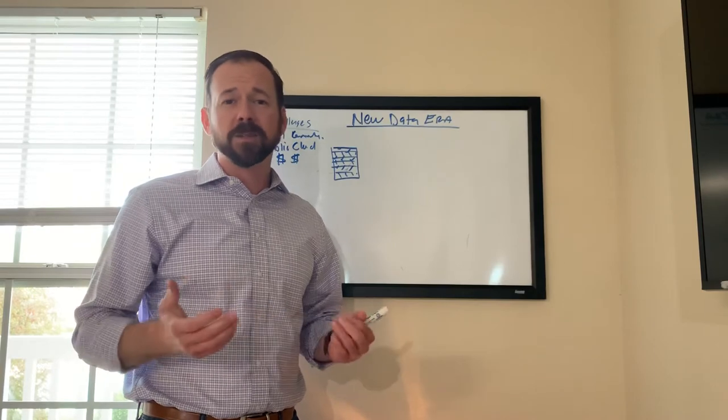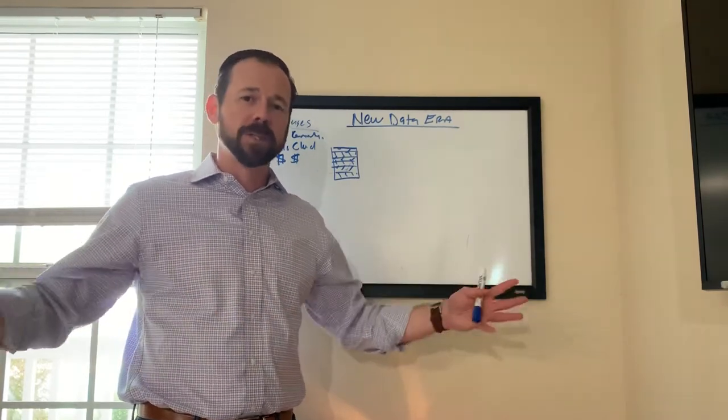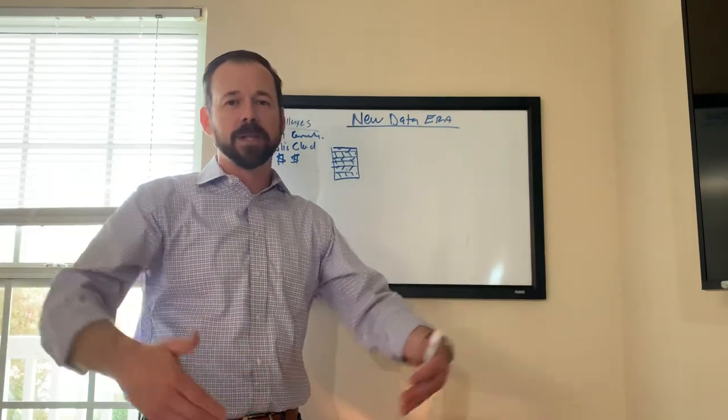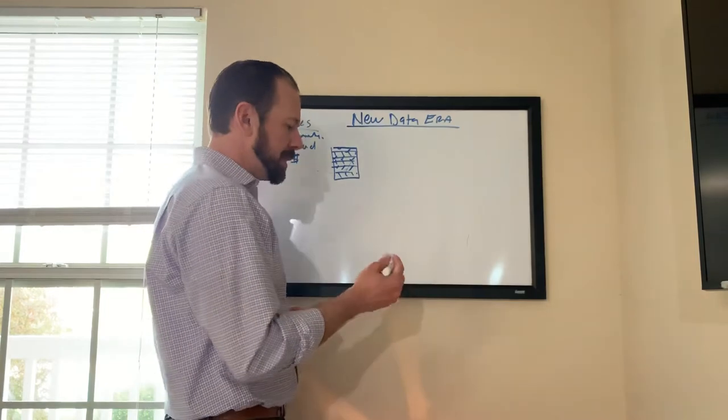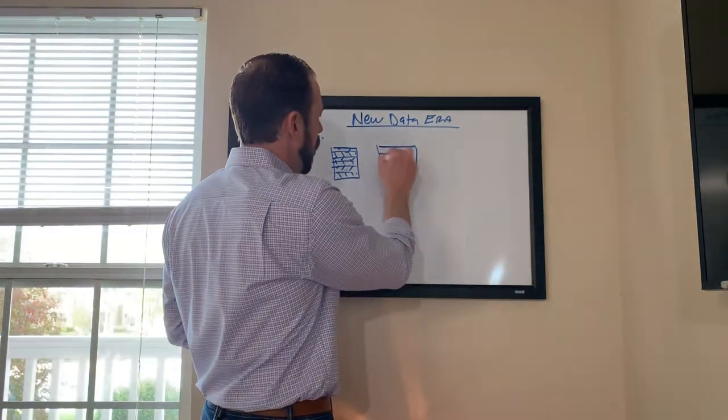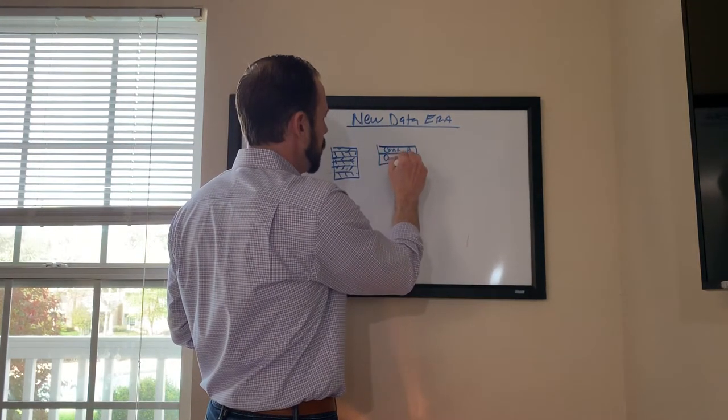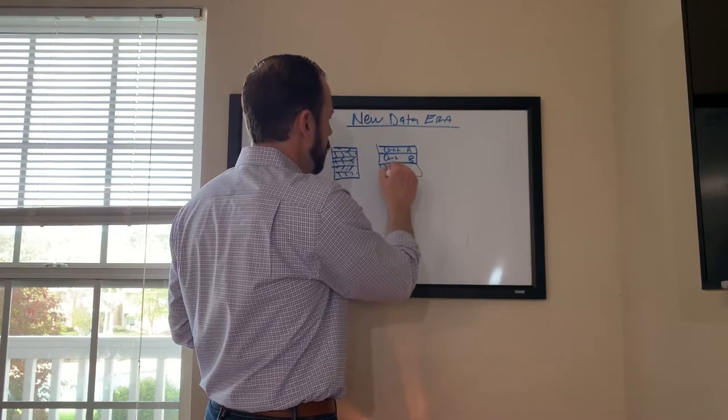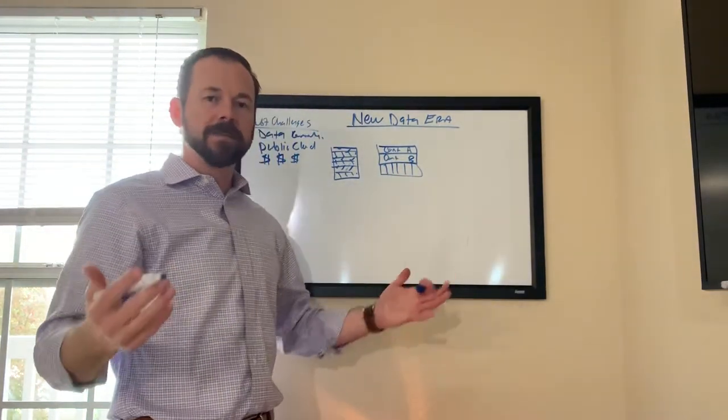And what all that is, is a storage array. And the storage array would house the data from all the servers. They would point to that, and that array would then serve the data back up to the applications that were running on the servers. So when that started, that architecture was what we call a dual controller architecture. So here's your controller A and controller B.